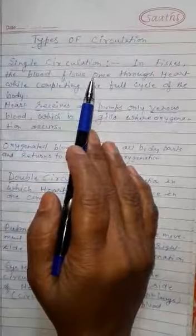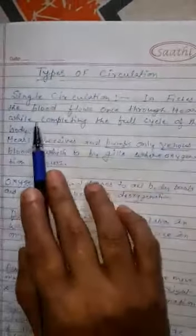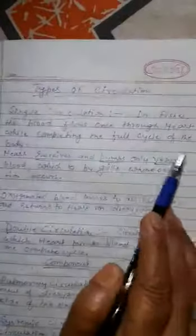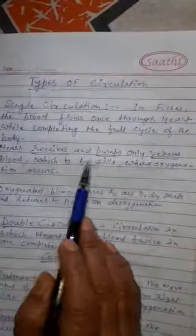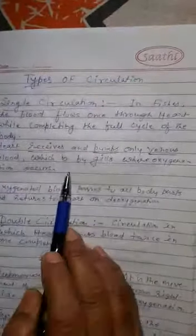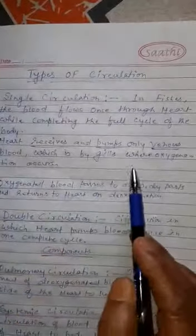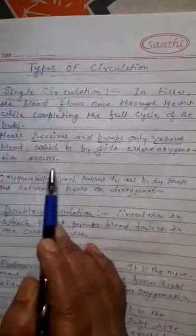Single circulation is seen in lower vertebrates. In fishes, the blood flows once through heart while completing the full cycle of the body. Heart receives and pumps only venous blood which is oxygenated by gills. In gills, oxygenation of blood occurs.